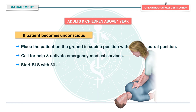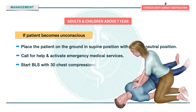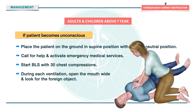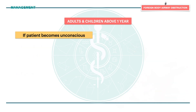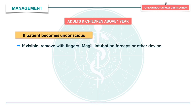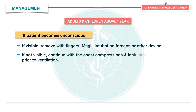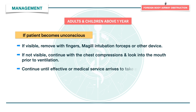Start basic life support with 30 chest compressions, and during each ventilation, open the mouth wide and look for the foreign object. If visible, remove the object with fingers, Magill intubation forceps, or another device. If not visible, continue with chest compressions and look into the mouth prior to each ventilation. Continue until effective or until medical services arrive to take over management.